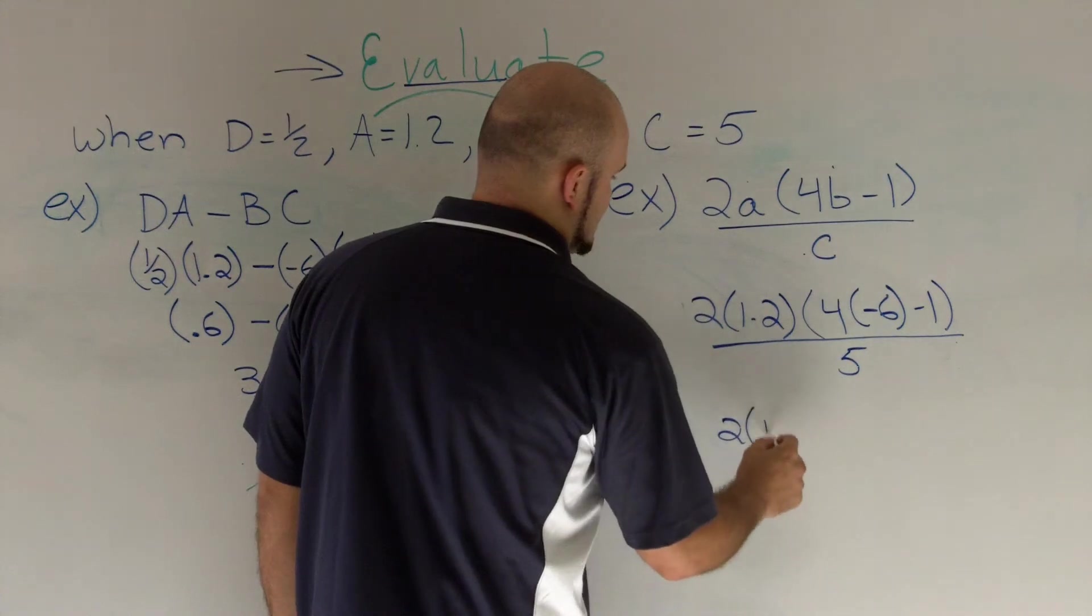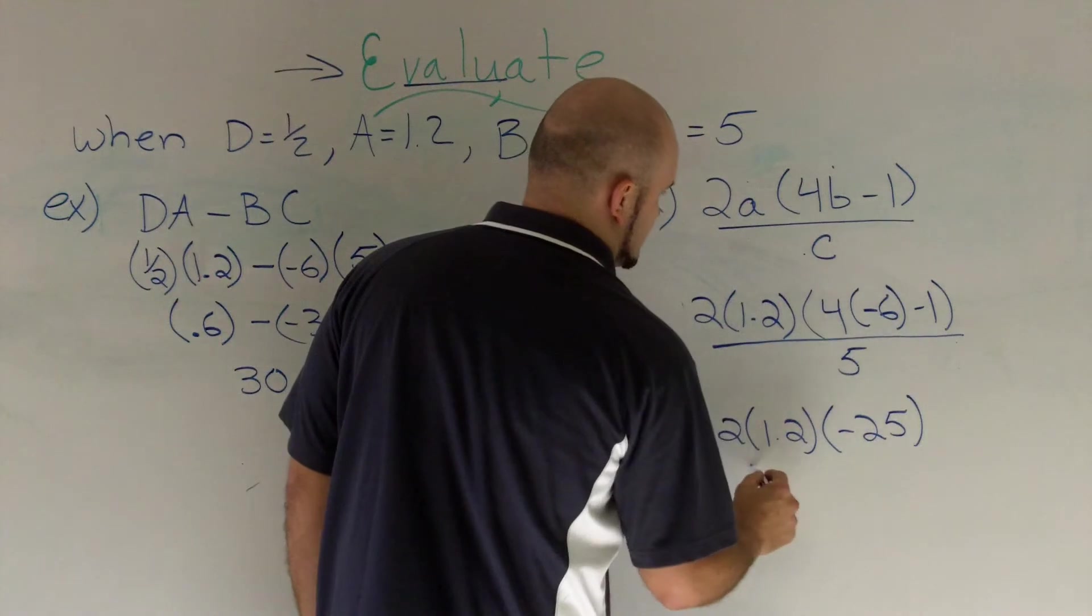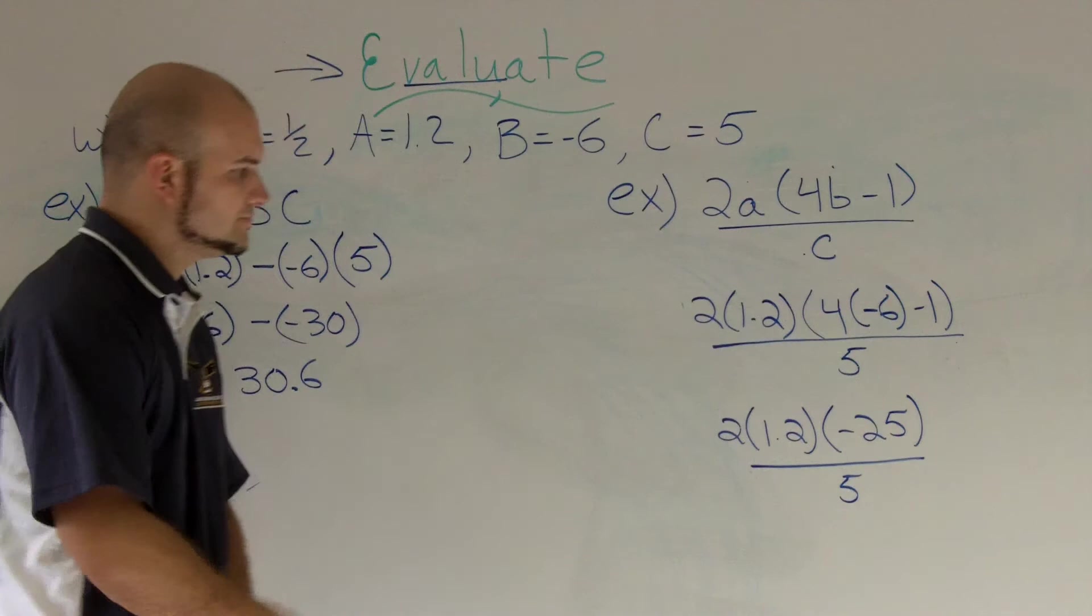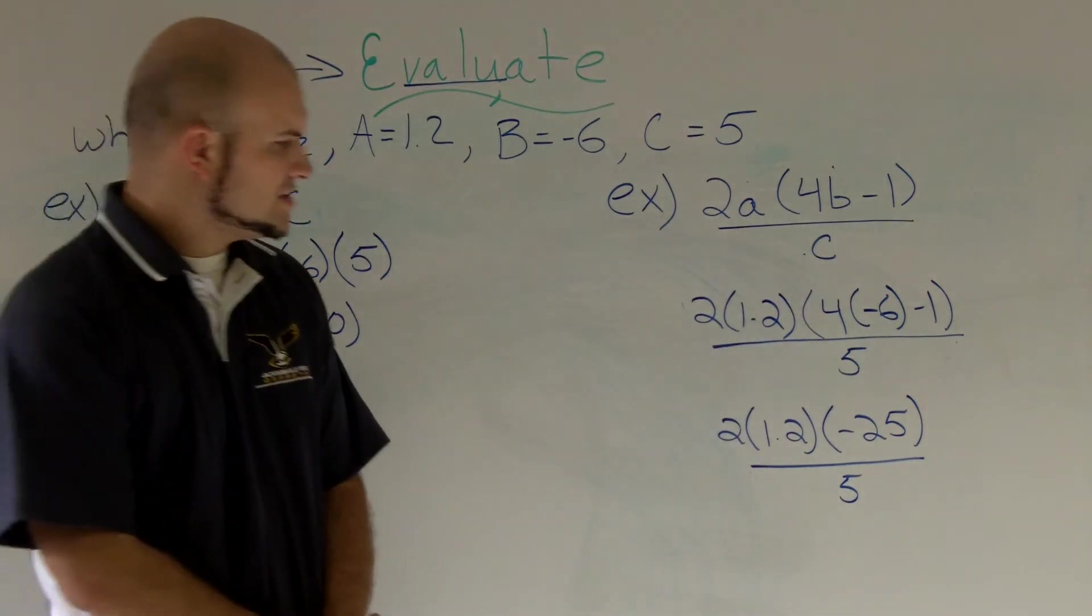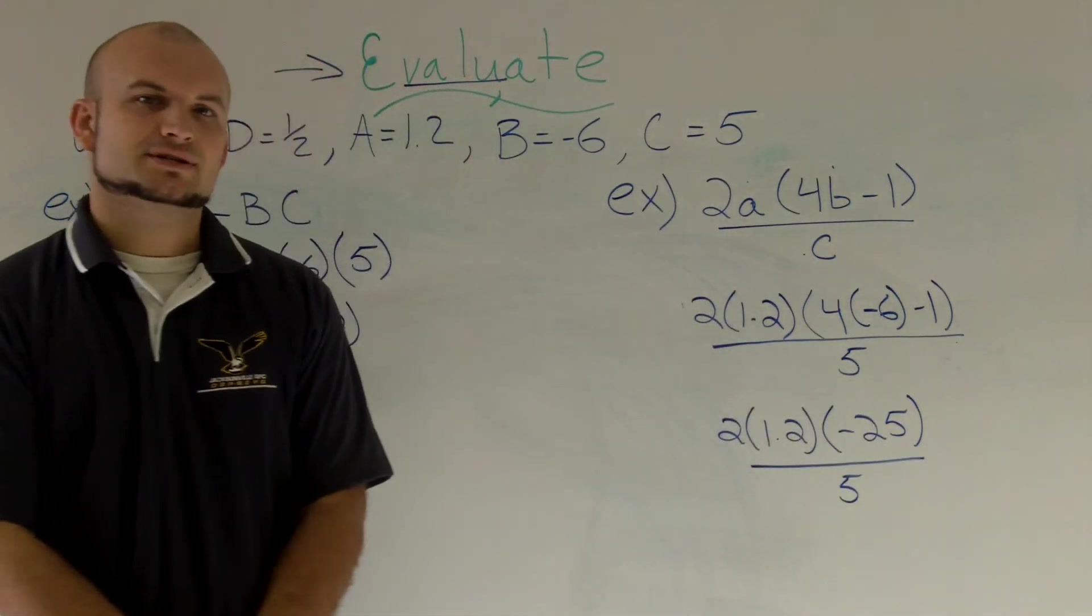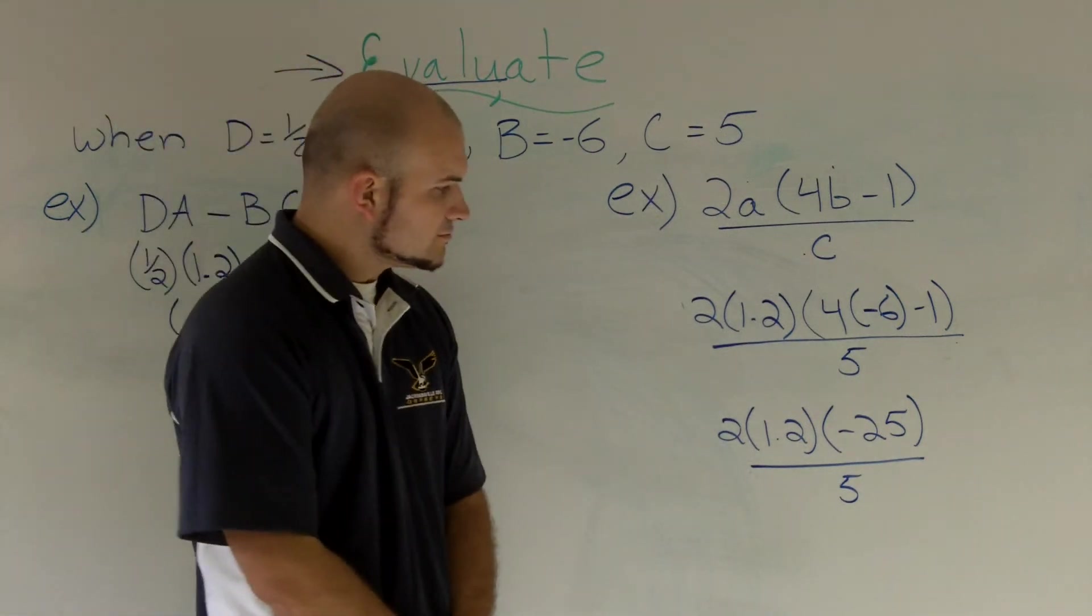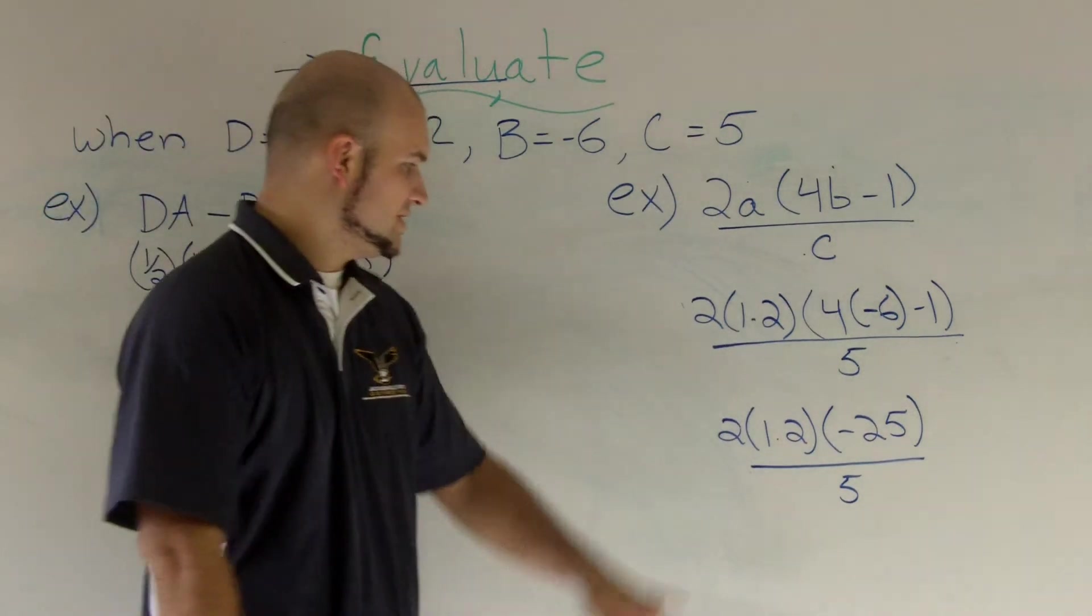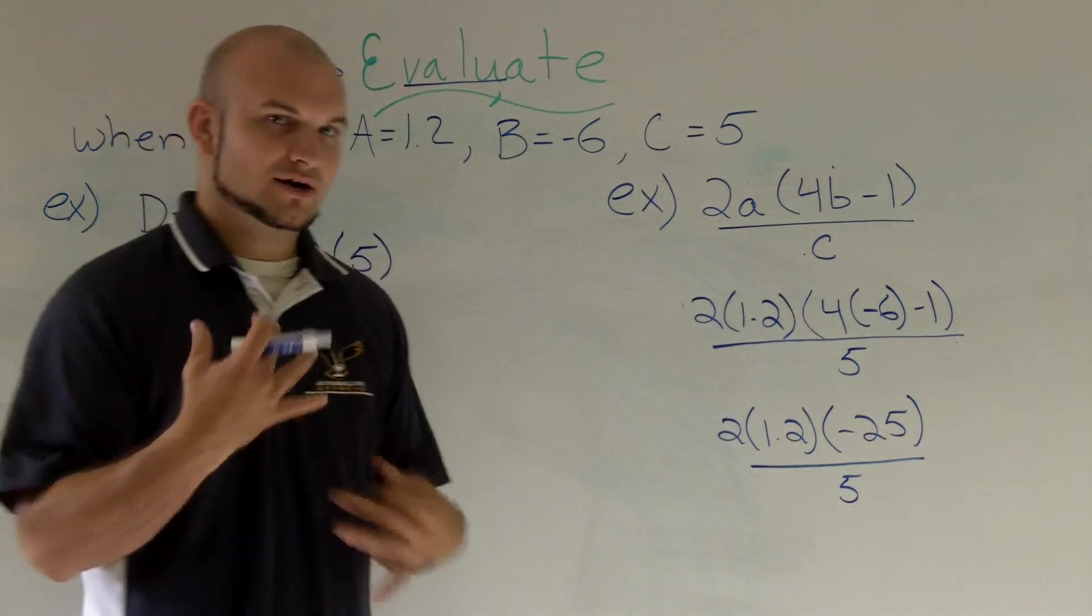So I have 2 times 1.2 negative 25 over 5. And there's a couple different ways that we can approach this problem. If you notice right up here we have just pretty much multiplication going straight across. And then we can go ahead and divide by the 5. For those of you that do not like doing division or this 2 times 2.4 scares you and you don't have a calculator.